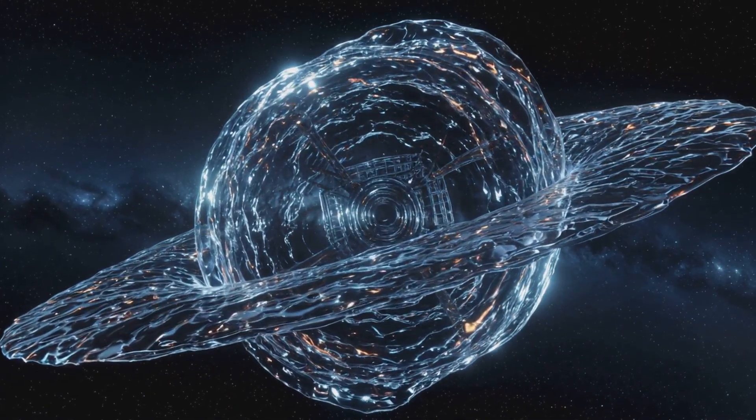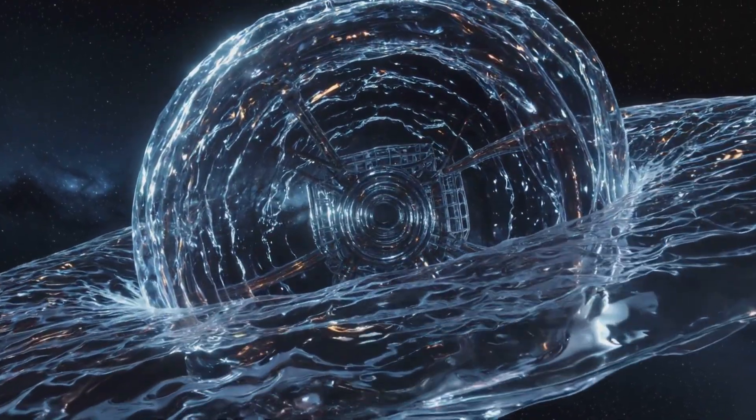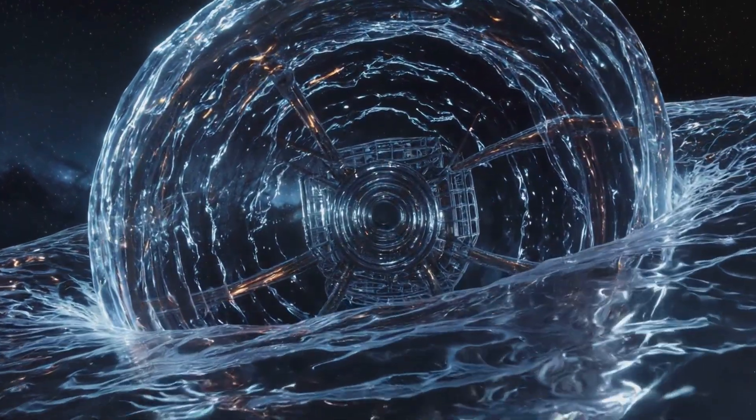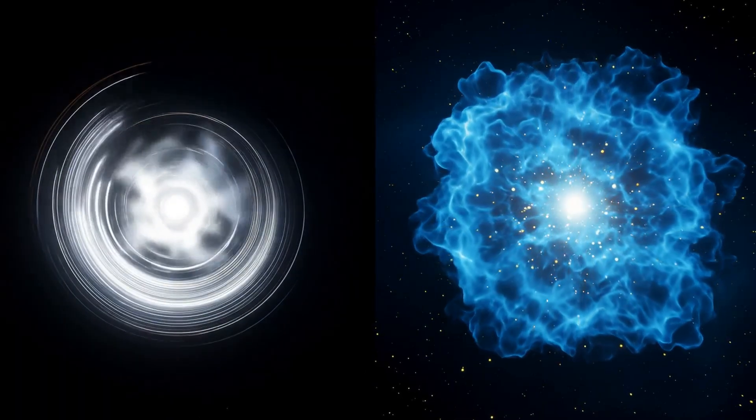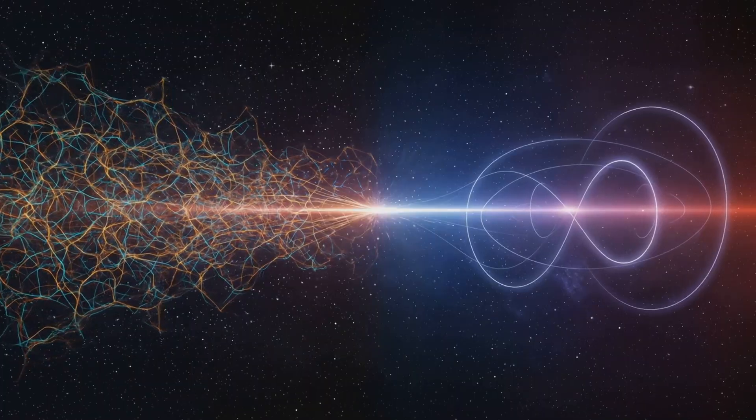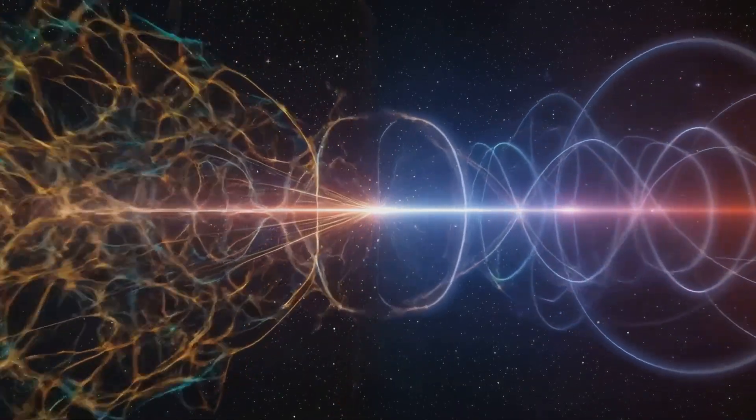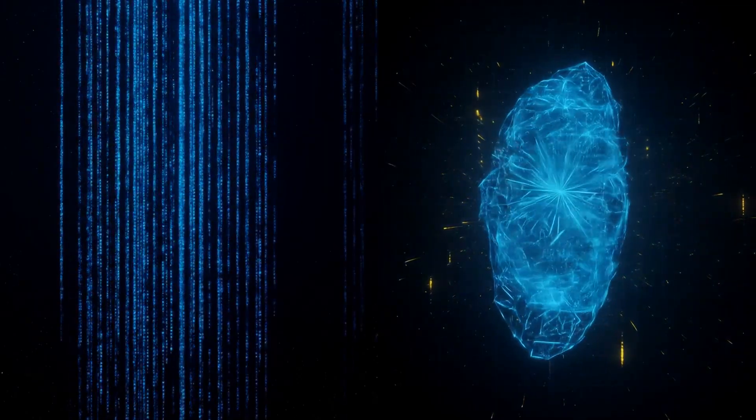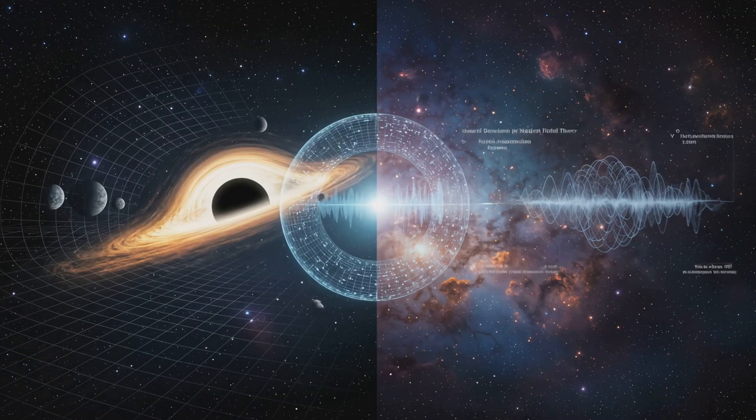From this interference field, gravity arises. As light spins and overlaps, its patterns form gradients, curvatures in the flow of information. These curvatures become spacetime geometry. When we correct Einstein's equations with quantum interference terms, we recover both general relativity and quantum field theory, not separately, but as parts of one unified holographic system.